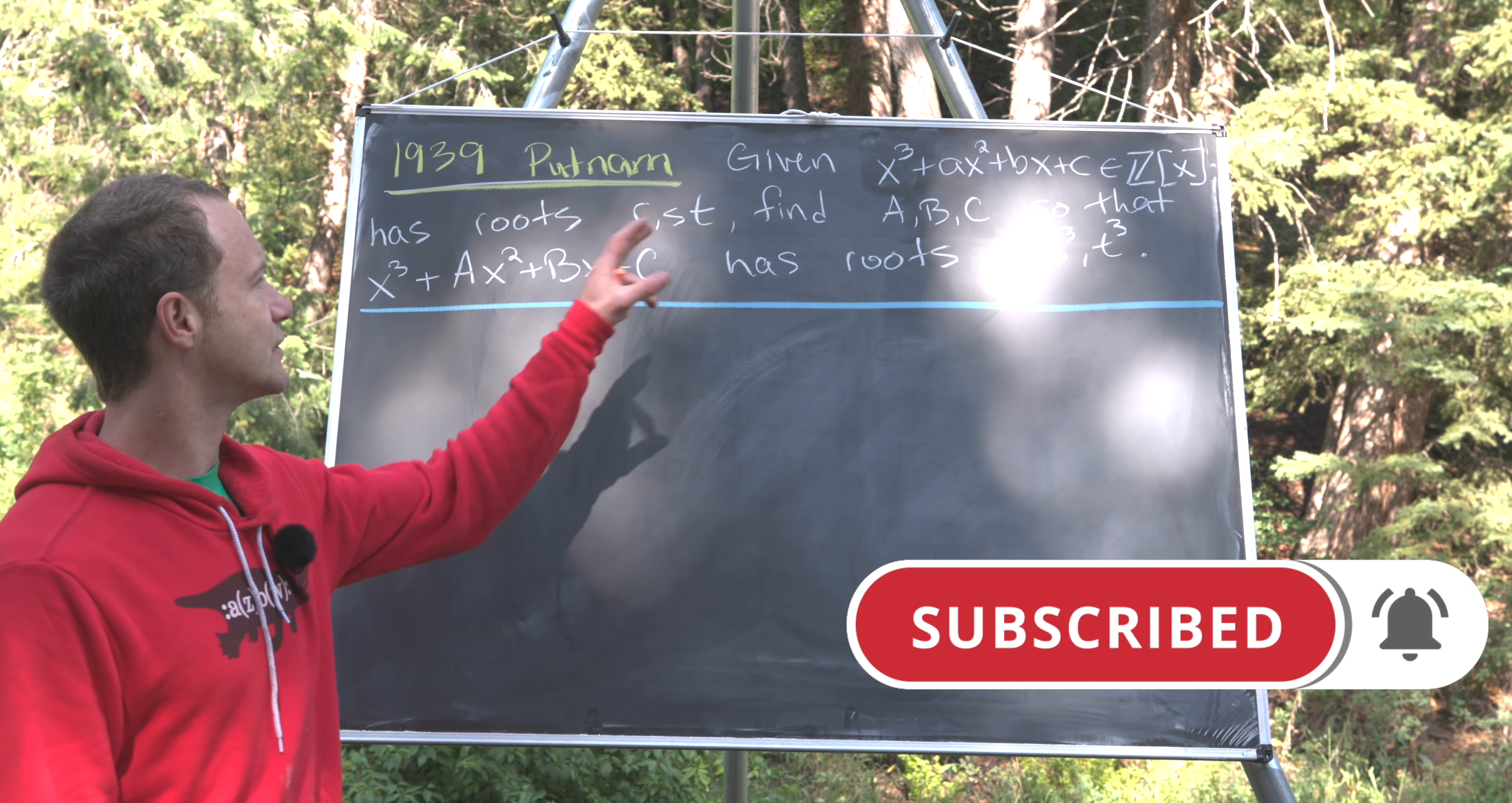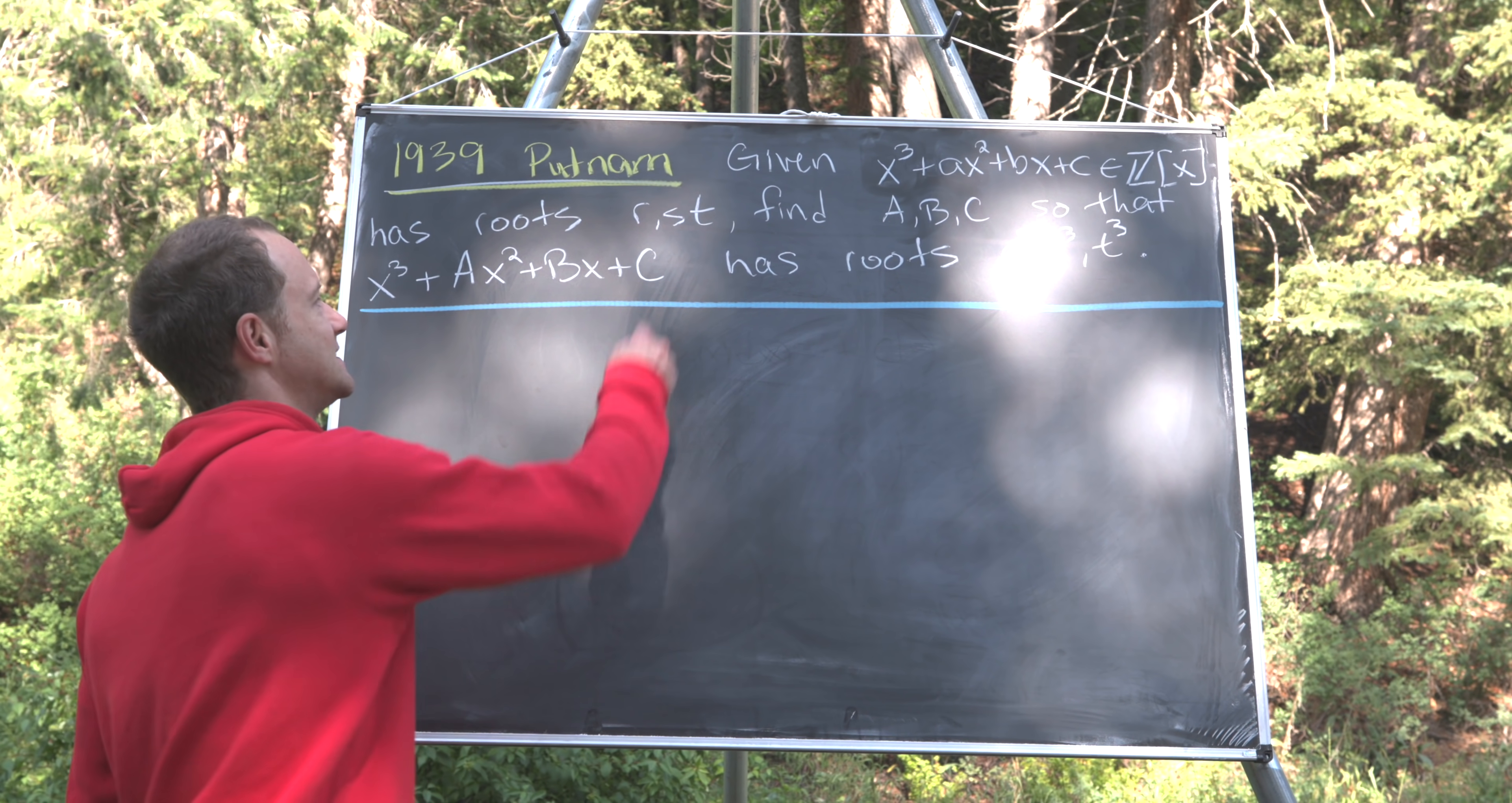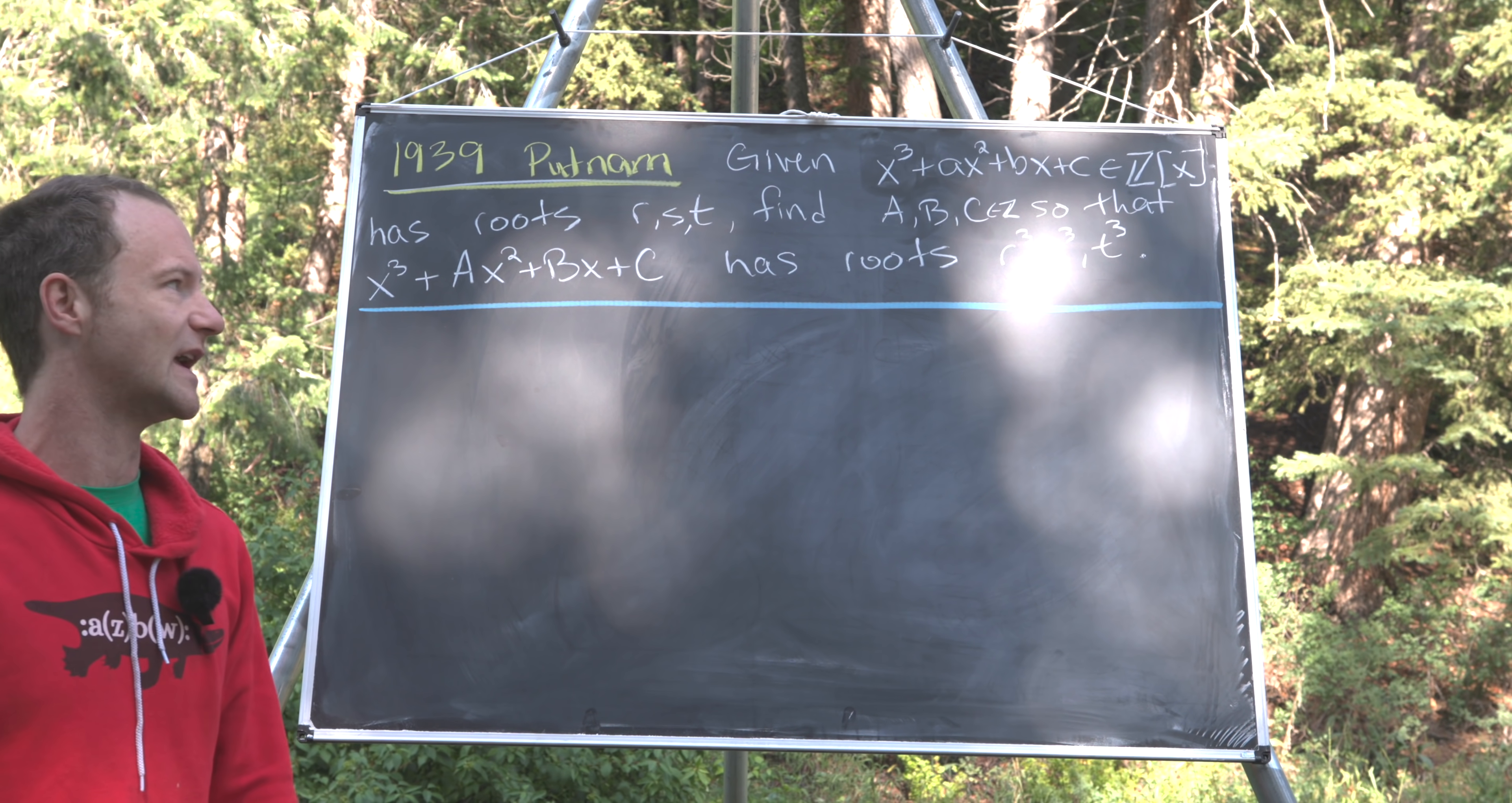So let's see what we've got. Given a cubic polynomial x³ + ax² + bx + c with integer coefficients, that's what I mean by saying it's in Z adjoint x, and it has roots r, s, t, we want to find three new integers, which I'll call capital A, B, C, so that this new polynomial x³ + Ax² + Bx + C has roots r³, s³, and t³.